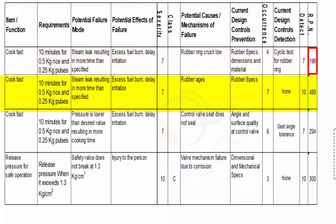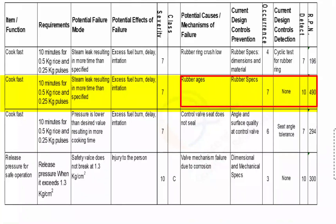The second row has the same severity ranking. But the potential cause is different — here we consider aging of rubber, which can happen over time. Rubber specifications alone may not be very adequate for this cause, so the occurrence ranking is 7. The current design control detection is none at this point, making the detection ranking 10, resulting in an RPN of 490.